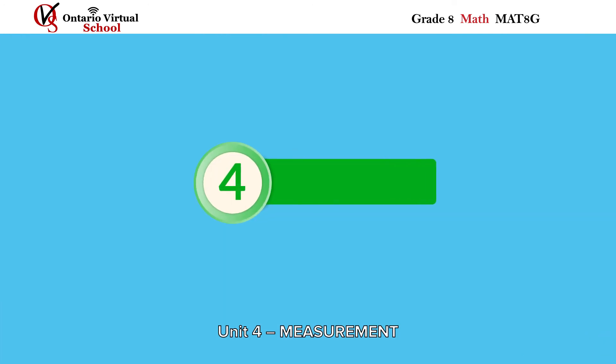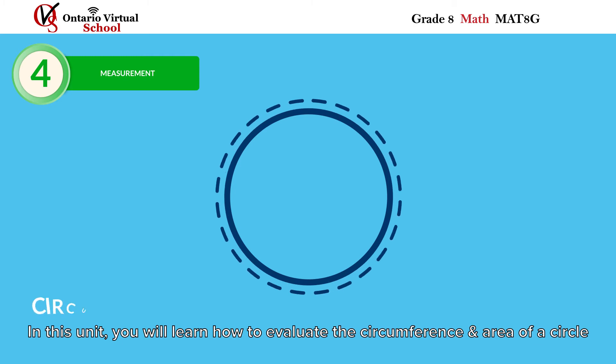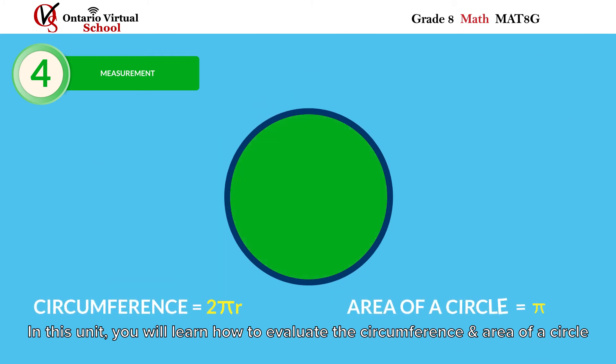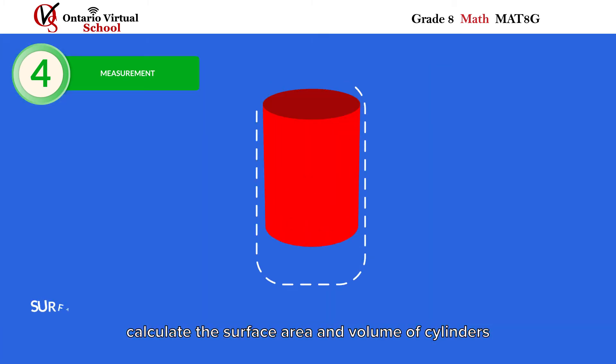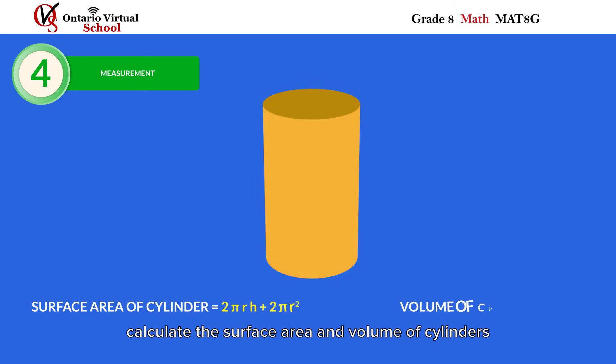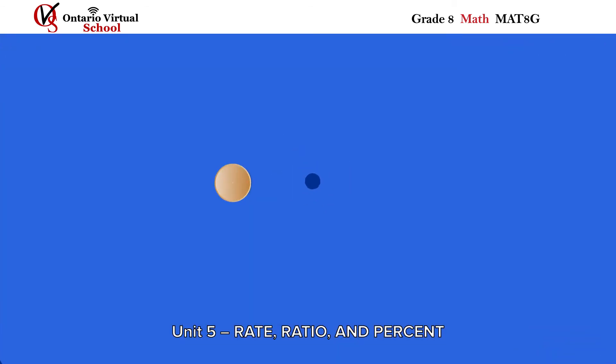Unit Four, Measurement: In this unit, you will learn how to evaluate the circumference and area of a circle and how to calculate the surface area and volume of cylinders. Unit Five, Rate, Ratio, and Percent: